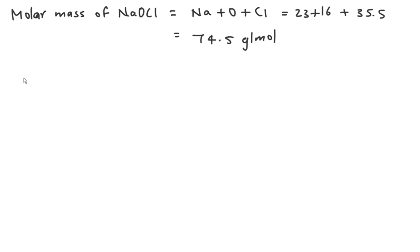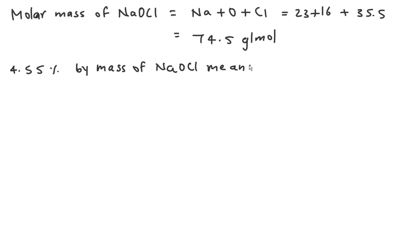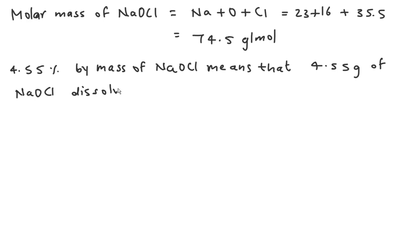We have mass by mass percentage given here, and that is the method to determine the concentration of solution. 4.55 percent by mass of NaOCl means that 4.55 gram of NaOCl, that is solute, is dissolved in 100 gram of solution.